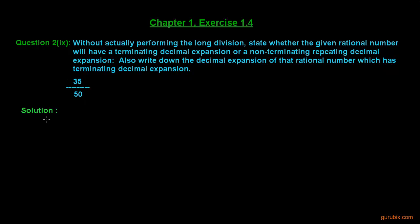So let us see how to solve this question. First, we shall write the rational number 35/50, and we can write this as 5×7 over 5×5×2. What we observe here is that 5